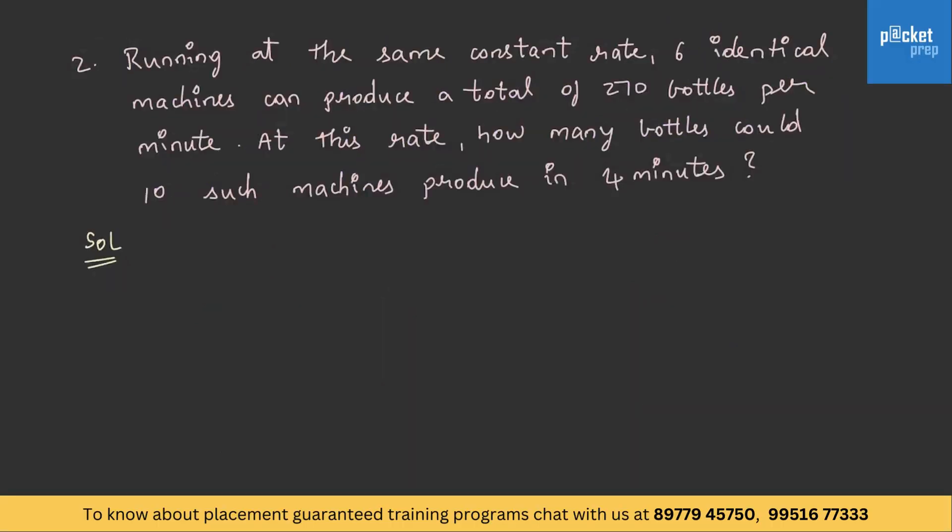This is how we get the solution using this formula. Let us solve another question. Running at the same constant rate, 6 identical machines can produce a total of 270 bottles per minute. At this rate, how many bottles could 10 such machines produce in 4 minutes? Like previous question, let us derive the elements from both the statements. Let M be the machines and B be the bottles or work done in this case, and T be time which is minutes. And in statement 2 as well, M2, B2, and T2.